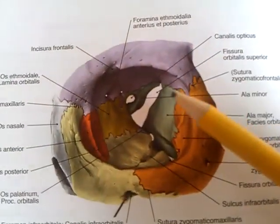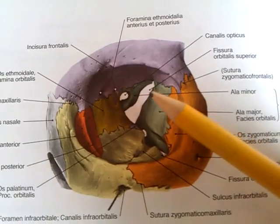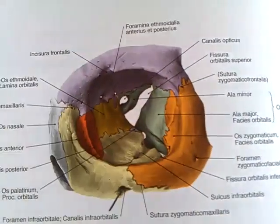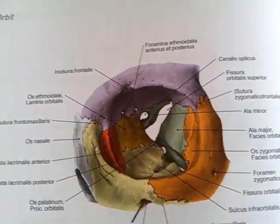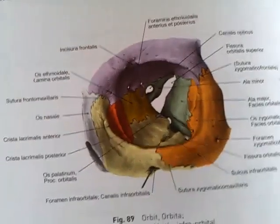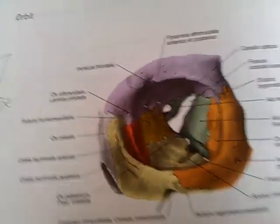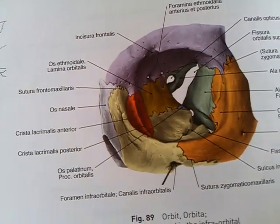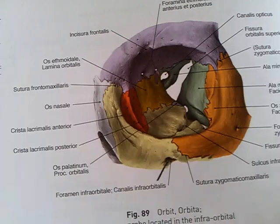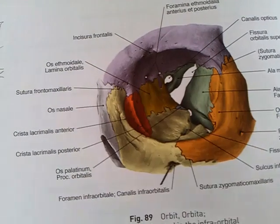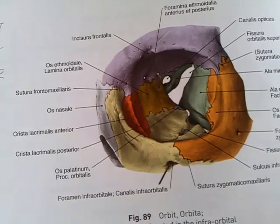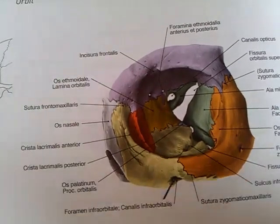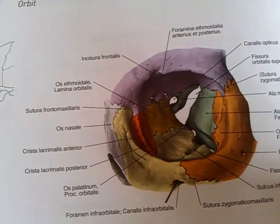Then you have the superior orbital fissure, which transmits the third, the fourth, the sixth, and the first branch of the fifth cranial nerve, and also the ophthalmic artery and vein.